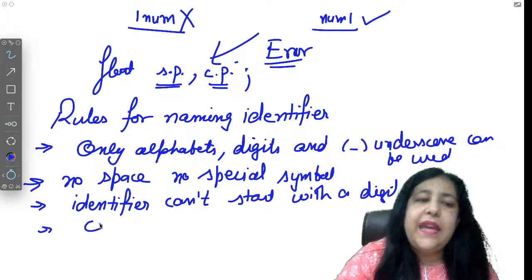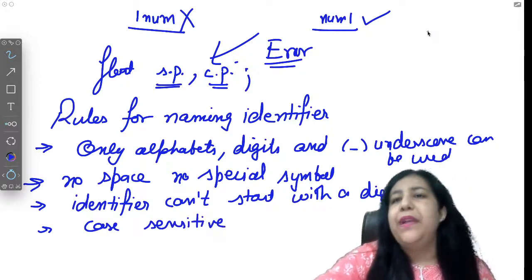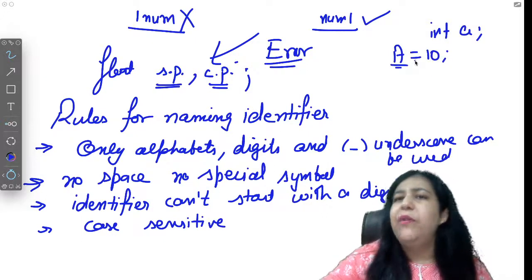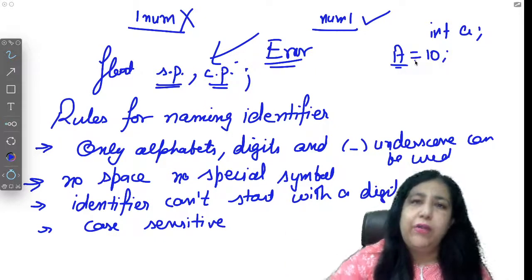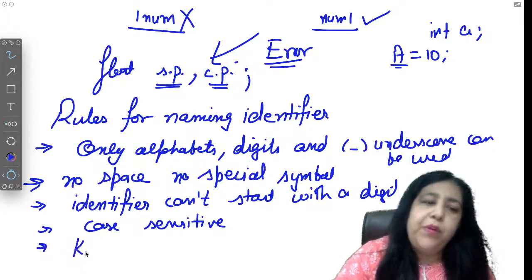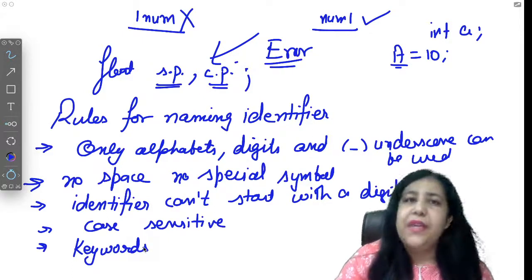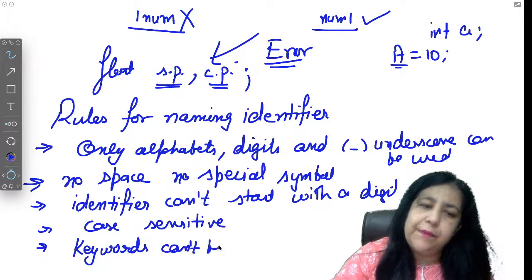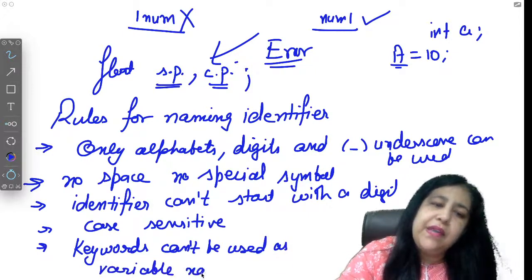It has to be an alphabet or it can be an underscore. Digit can't be at the start. Case sensitive means if you declared int a small and you put value in a small, you can't use capital A, because you declared a small and you used capital A. It's not allowed. You have to use as you declared. And very important point is keywords cannot be used for any other purpose. So you can't use them for any other purpose.